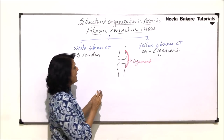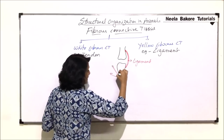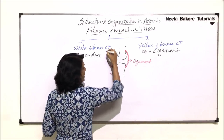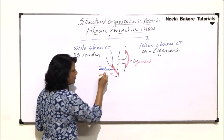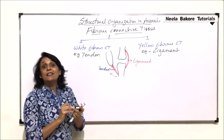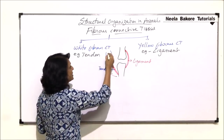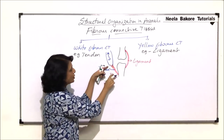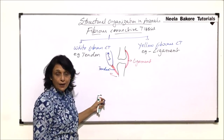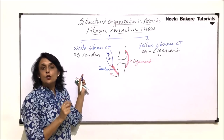That is why ligament has more elastin fibers. Tendons help muscles attach to the bone. If this bone has to move in a particular direction, the tendon connects the muscle to the bone. Such tissue should be tough and non-elastic, so that when the muscle contracts, this structure does not stretch and is able to pull the bone. So tendons have less elastin fibers.